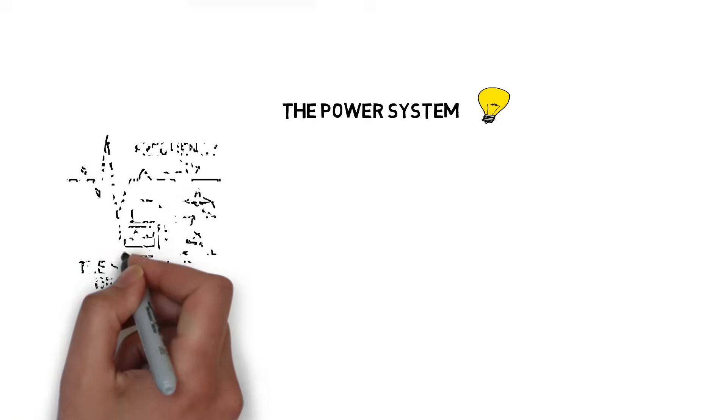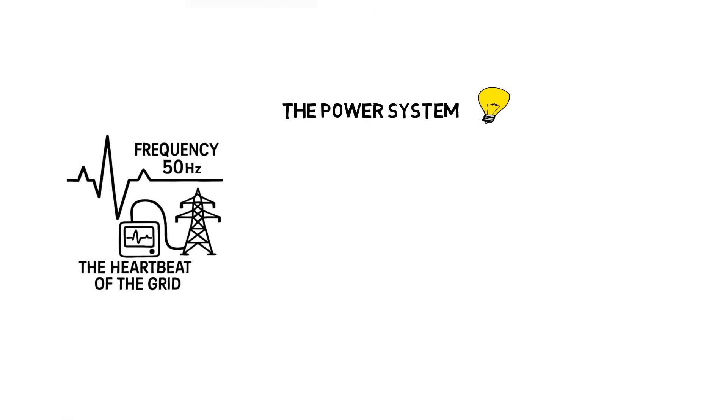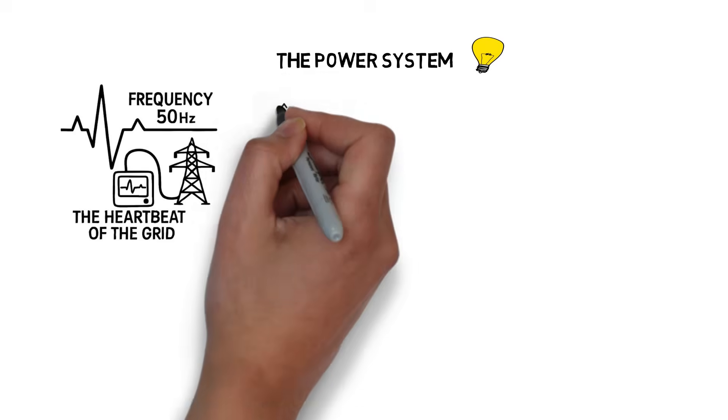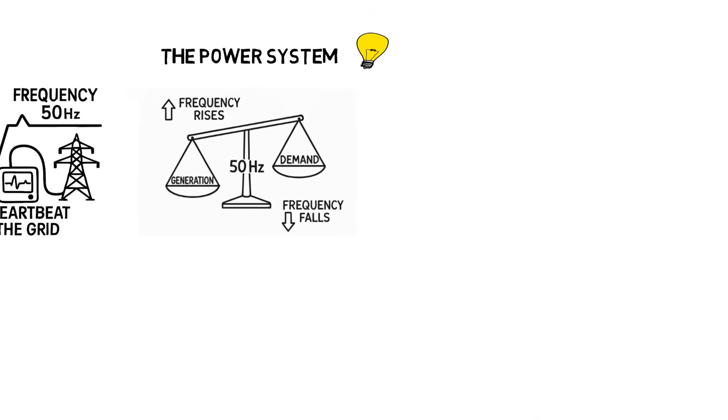Before we dive into the chaos of blackouts, let's first understand what keeps the lights on. Electricity flows through the grid at a steady rhythm, 50 hertz in Europe. This frequency is more than just a number. It's the heartbeat of the entire system. But when that rhythm falters, even slightly, the consequences can be catastrophic.